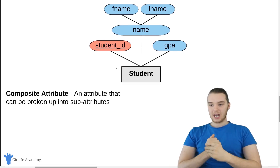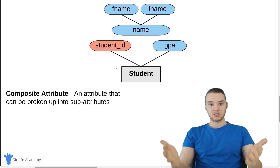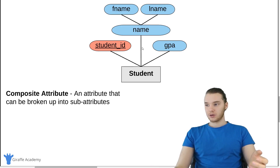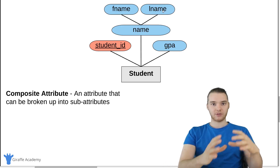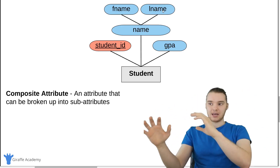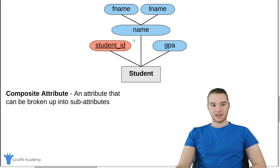Next, we can define composite attributes. These are attributes that can be broken up into sub-attributes. For example, if we wanted to store the student's name, we can store their name, but we can also store their first name and their last name. So name could be broken up further into first name and last name. In the case of a composite attribute, we have the main attribute connected to the entity, and then off of that main attribute we have two other attributes — F name and L name for first name and last name.